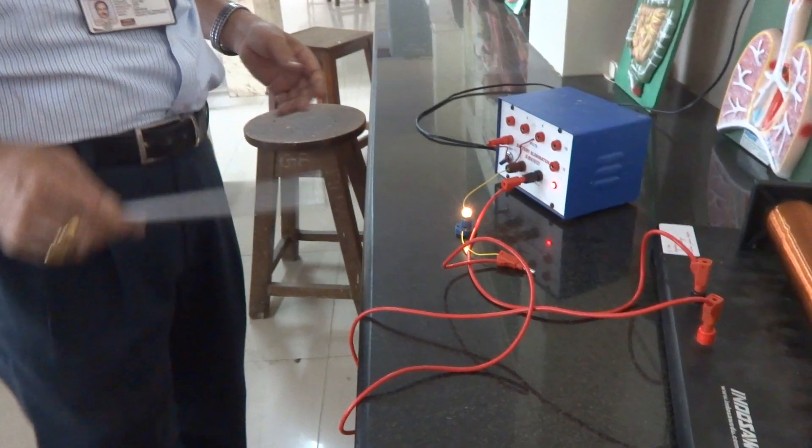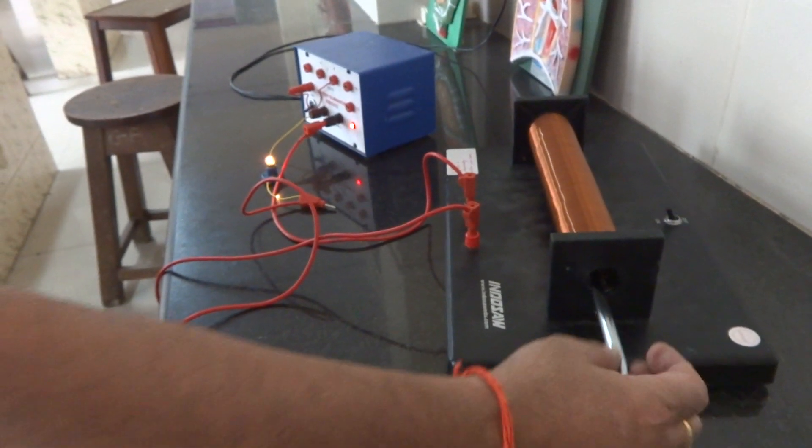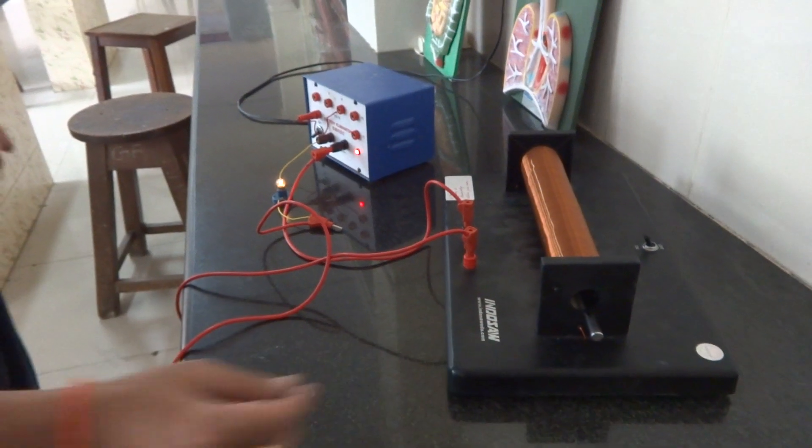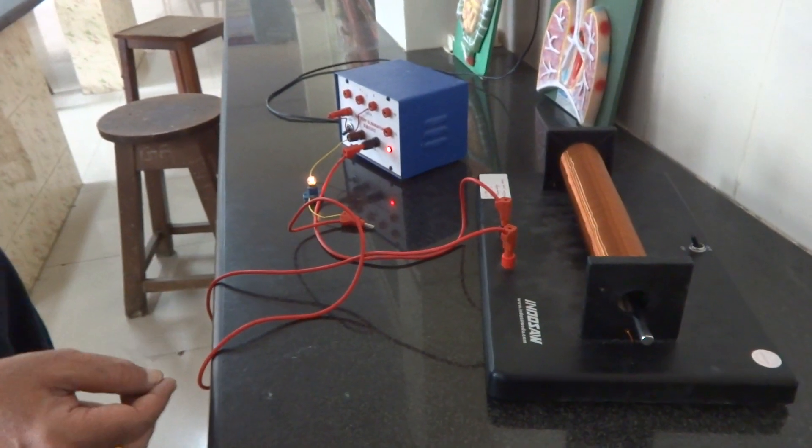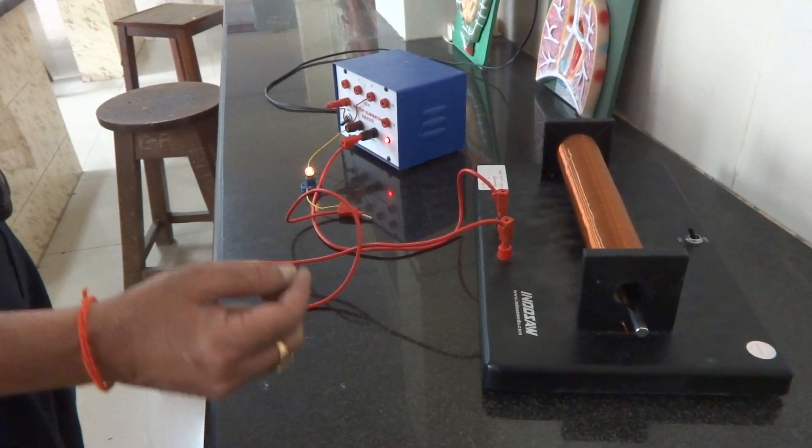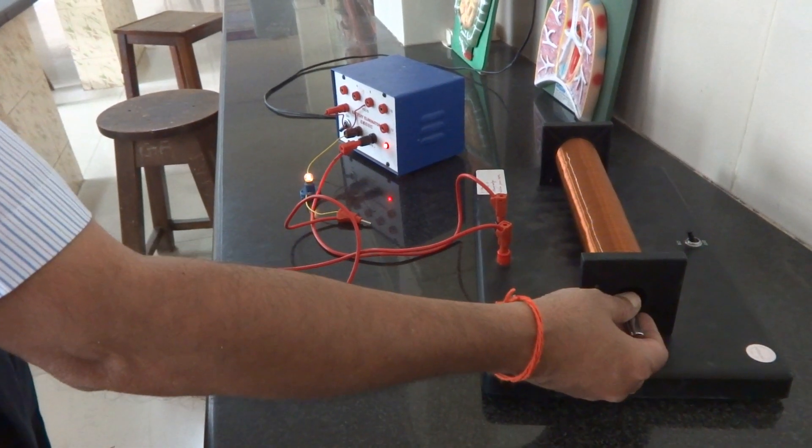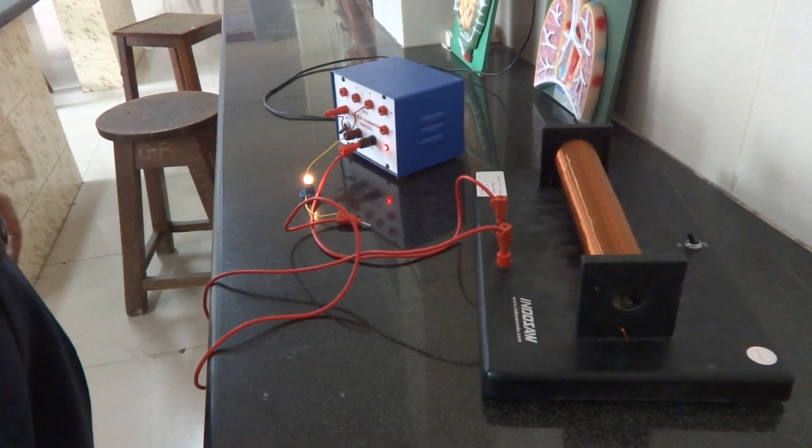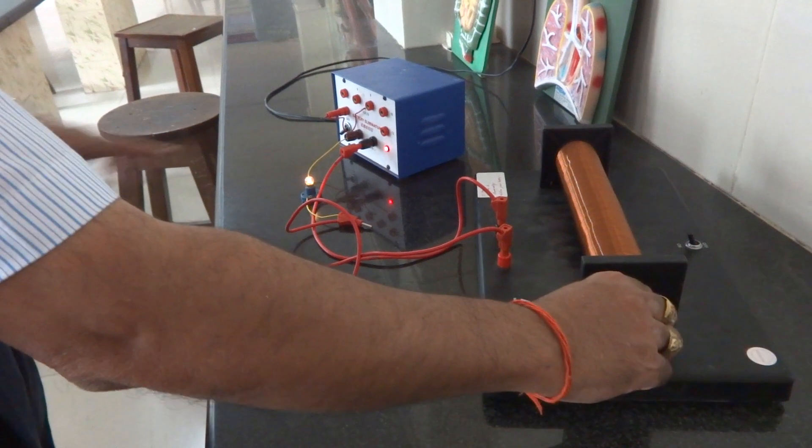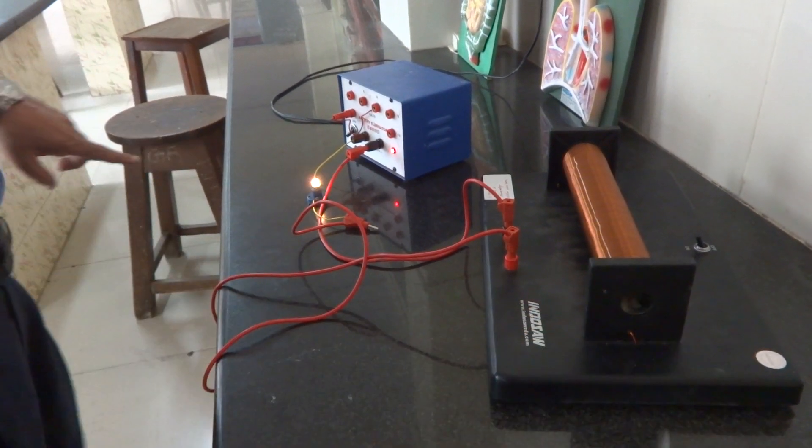So this is the simple demonstration that the core inserted in the inductor will increase the net reactance of the circuit, which can be visualized through the brightness of the bulb.